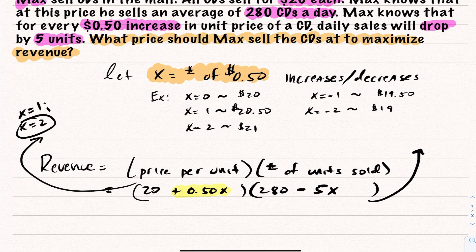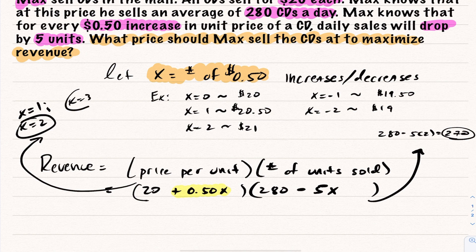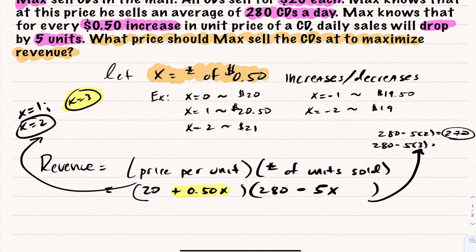When X equals two, we get 280 minus 5 times 2, which equals 270 — we've lost ten sales. When X equals three, we get 280 minus 15, which is 265 — a loss of 15 units, just as expected. So these two expressions work together: every time we increase the price by 50 cents, we lose five sales.